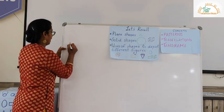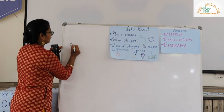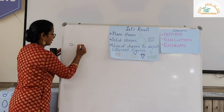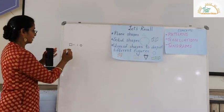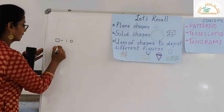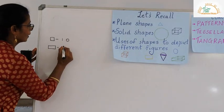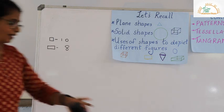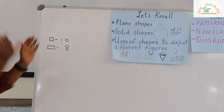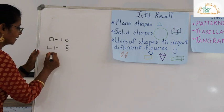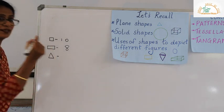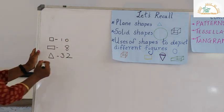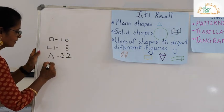Oh yes, square. How many squares were there? Ten. And rectangles? Eight. Can anyone tell me how many triangles were there in the figure? Thirty-two. Yes, thirty-two. So we have thirty-two triangles and only one circle.